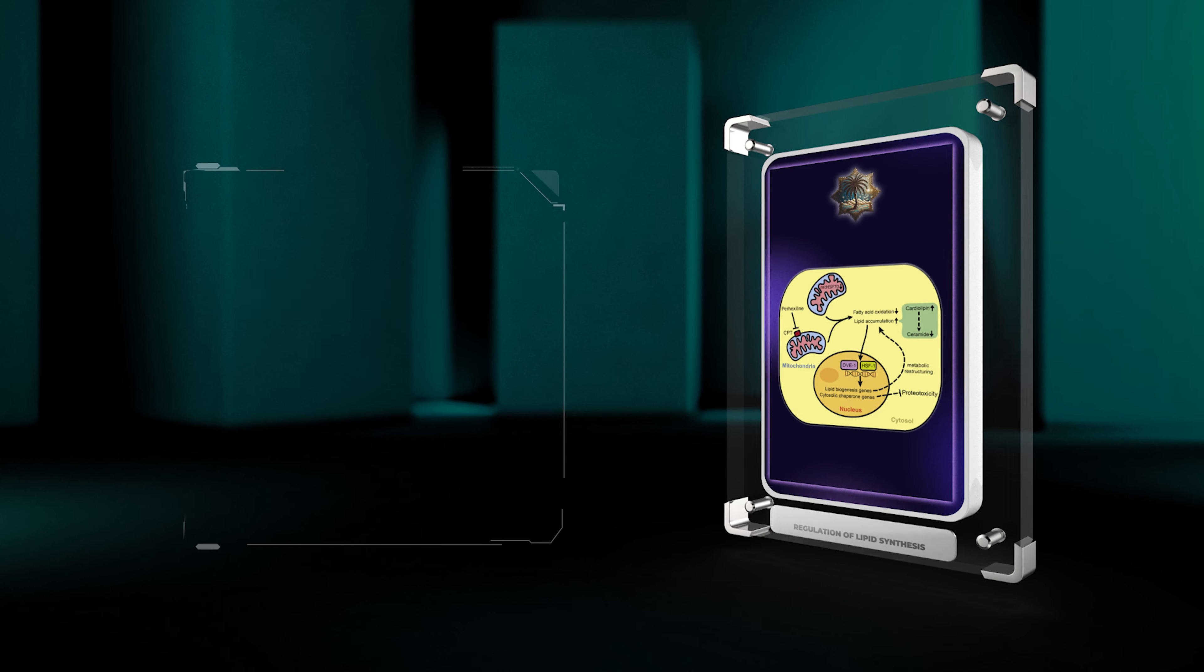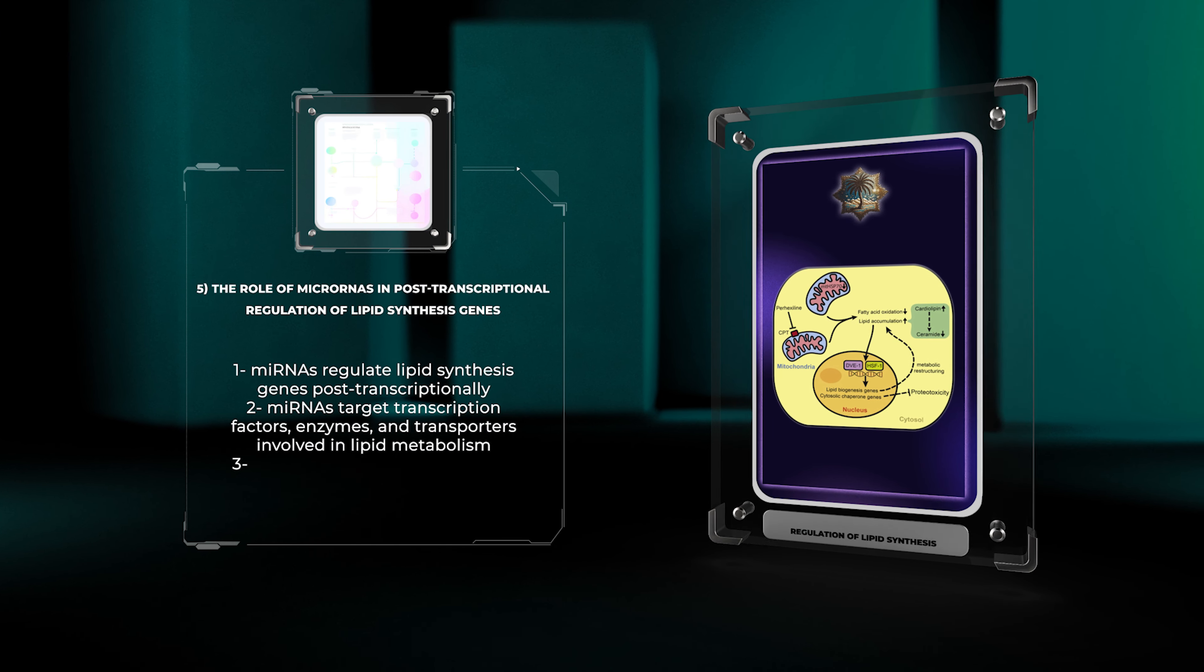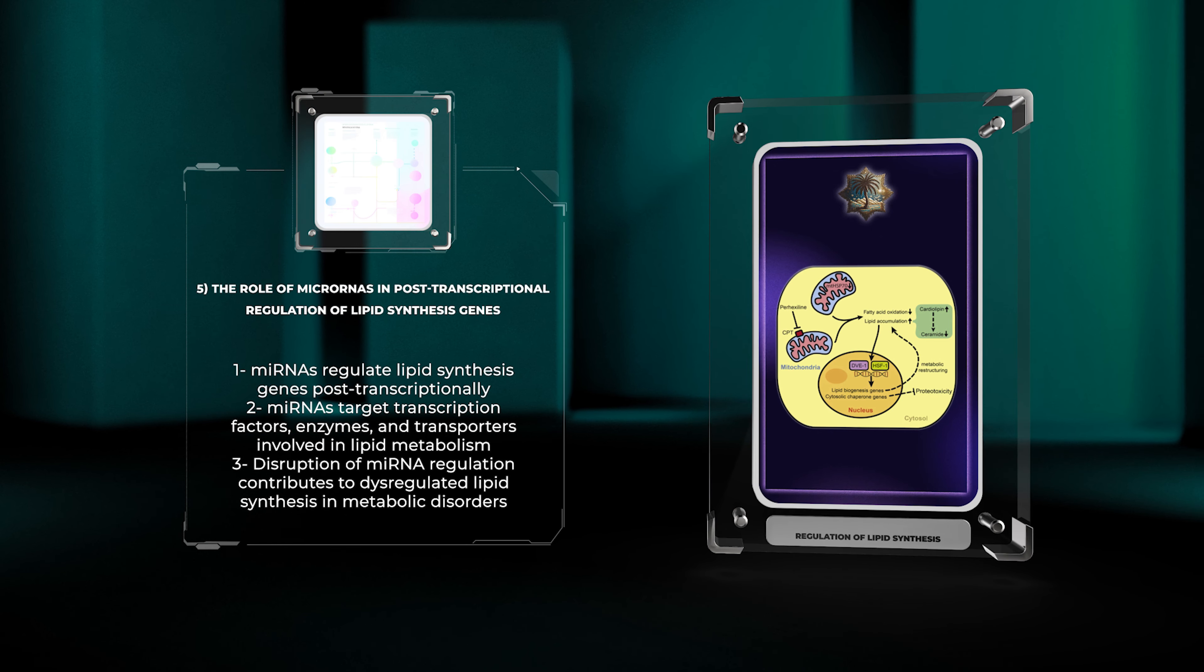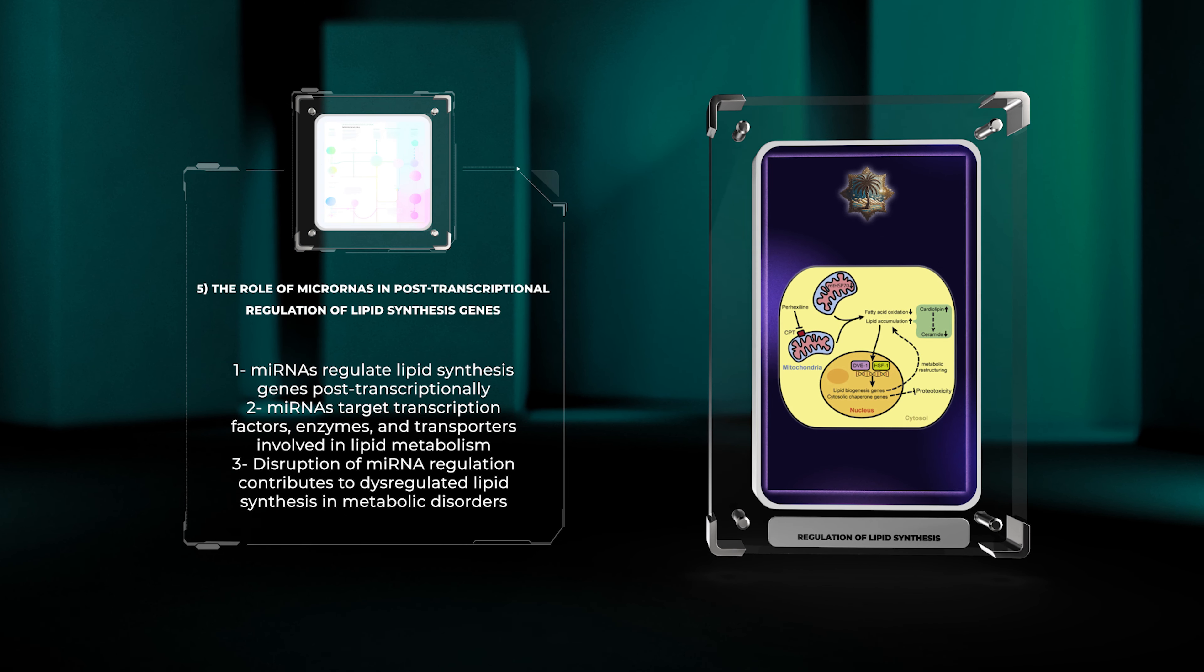MicroRNAs (miRNAs) are small non-coding RNA molecules that regulate gene expression post-transcriptionally. miRNAs target the three prime untranslated regions of messenger RNAs (mRNAs) and either inhibit their translation or promote their degradation.